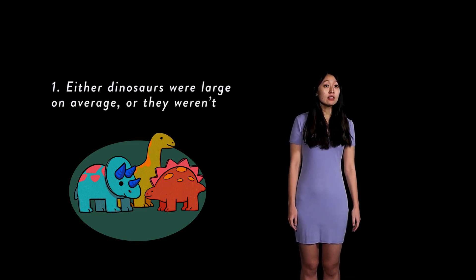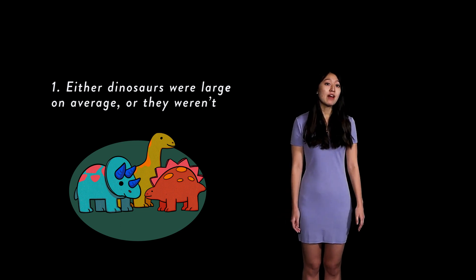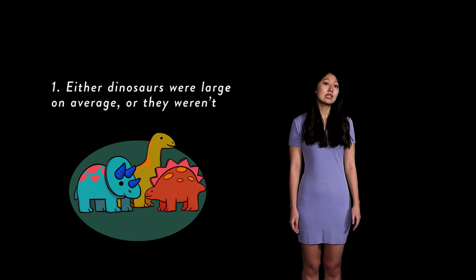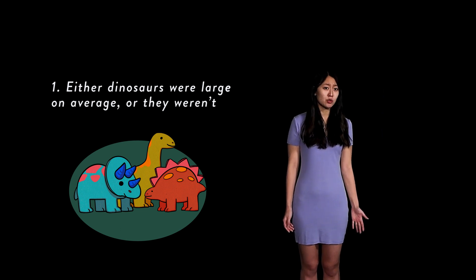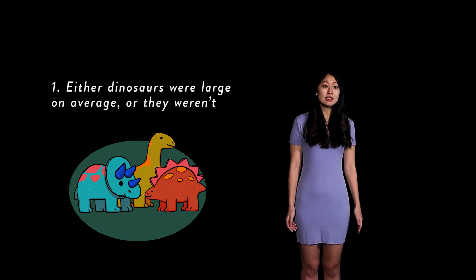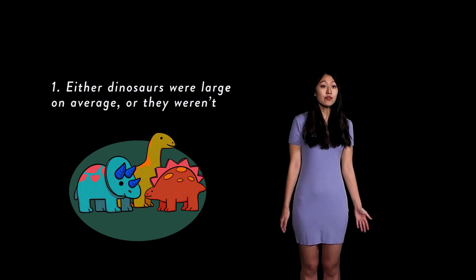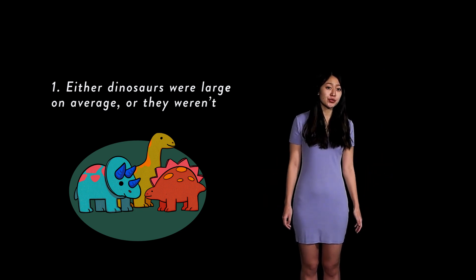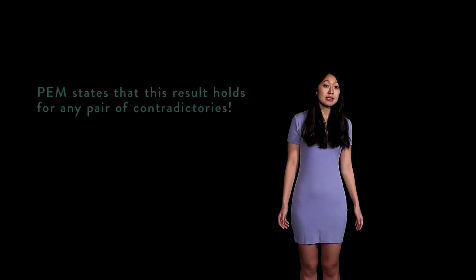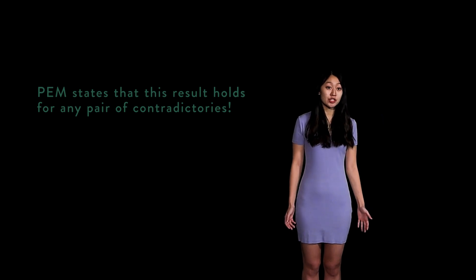Let us look at another step-by-step example of PEM at work to further emphasize just how intuitively basic it appears to us in common cases. This time around, let's look at a proposition with the verb 'to be' in the past tense to illustrate that PEM holds in straightforward sentences about the past as well. One: either dinosaurs were large on average, or they weren't. In the case of past events, as in the case of present ones, evaluating the truth of one is a matter of checking against the facts of the world to see if there is a correspondence between what was or is the case and the content of the proposition. It seems trivially true that either dinosaurs were large on average or they weren't. Whatever the relevant state of affairs indicates will make one of the two disjuncts true. Therefore, the entire expression — either dinosaurs were large on average or they weren't — will be true by virtue of one of the contradictories in the pair being true.